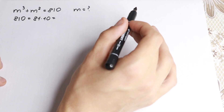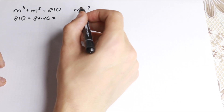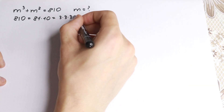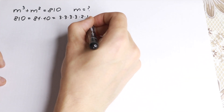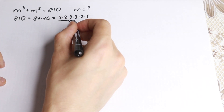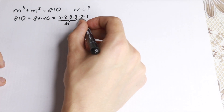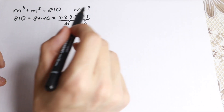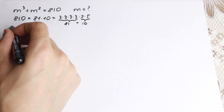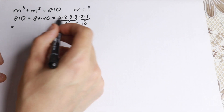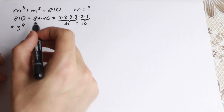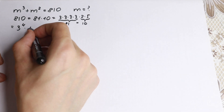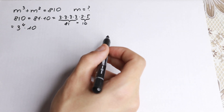What is another way we can write it? We can write 810 as 3 × 3 × 3 × 3 × 2 × 5. So 3 × 3 × 3 × 3 equals 81 and 2 × 5 equals 10. Notice that 3 × 3 × 3 × 3 is 3 to the fourth power, and 2 × 5 is 10, so we can write it as 3⁴ × 10.